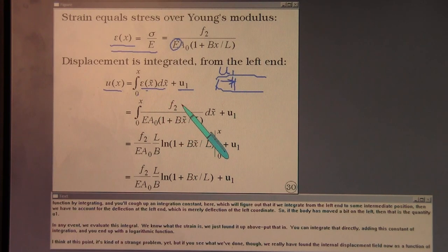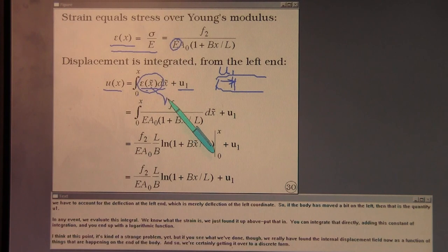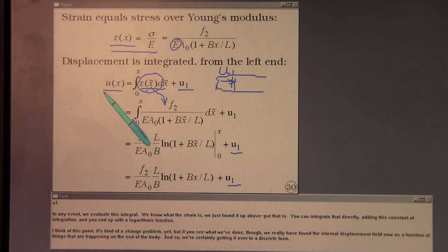And the fundamental theorem of calculus is that if you know what the derivative of a function is, then you can get the function by integrating and you'll cough up an integration constant here, which will figure out that if we integrate from the left end to some intermediate position, then we have to account for the deflection at the left end, which is merely the deflection of the left coordinate. So if the body has moved a bit on the left, then that is the quantity u1. In any event, we evaluate this integral, we know what the strain is, we just found it up above, put that in. You can integrate that directly, adding this constant of integration, and you end up with a logarithmic function. I think at this point, it's kind of a strange problem yet, but if you see what we've done though, we really have found the internal displacement field now as a function of things that are happening on the end of the body. And so we're certainly getting it over to a discrete form.